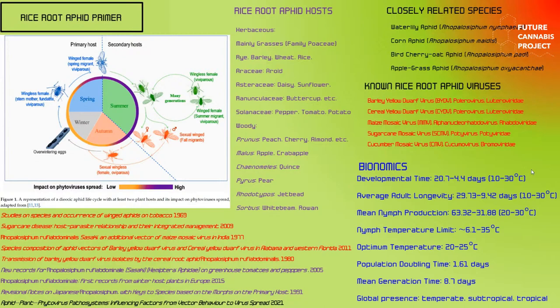Rice root aphids are known to vector several viruses: barley yellow dwarf virus, cereal yellow dwarf virus, maize mosaic virus, and sugarcane mosaic virus. Cucumber mosaic virus deserves particular attention because it is known to infect cannabis. While the epidemiology is not well understood, it's plausible that the rice root aphid could be a vector for cucumber mosaic virus in cannabis — though peer-reviewed empirical research is needed to confirm this.